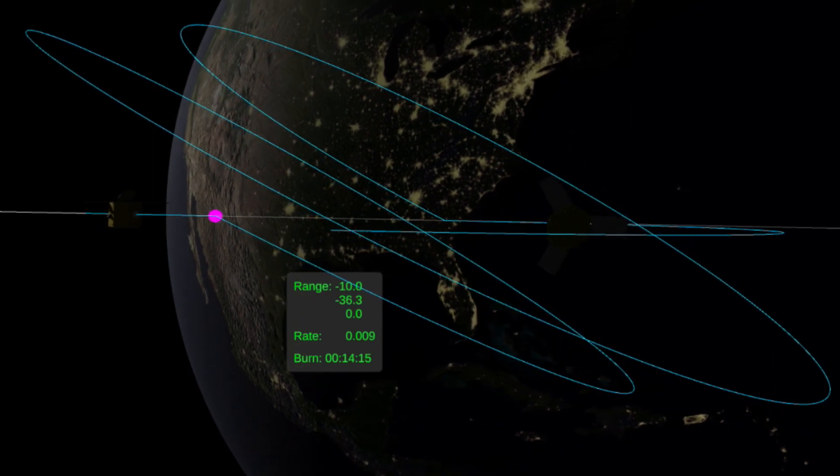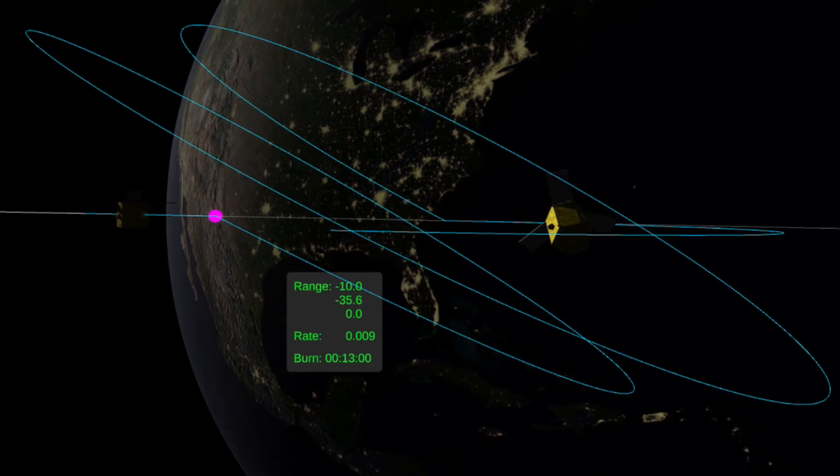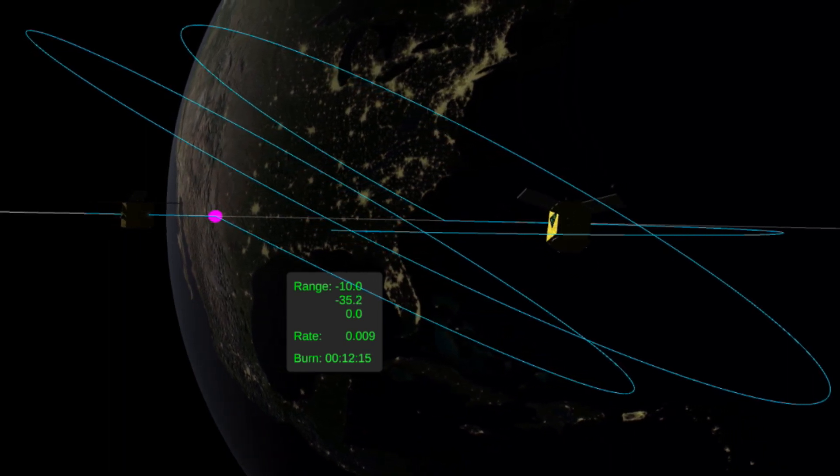In this scenario, the servicer will perform a burn to enter the proximity orbit around the target satellite, which will allow it to enable a repair mission.